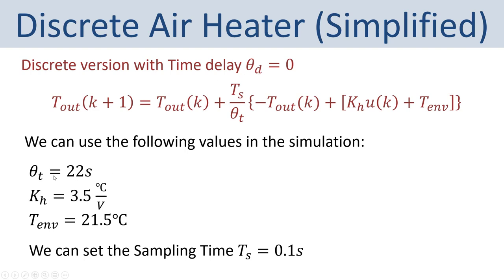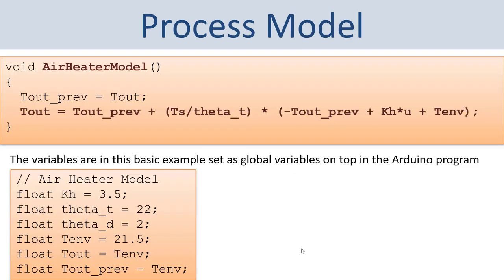We can use the following model parameters: time constant T = 22 seconds, Kh = 3.5, and environmental temperature = 21.5 degrees Celsius. We also set the sampling time Ts = 0.1 seconds. Then we end up with an implementation in Arduino software as a separate function called air heater model, where we implement this equation for the air heater system. Again, I have put all the variables on top of the program as global variables for simplicity.